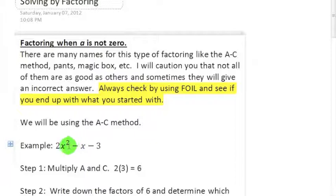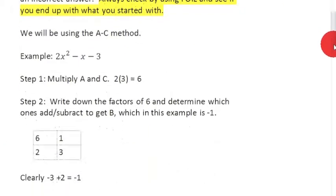It's going to be very similar to what we do here, but it's going to be called the AC method because we're going to take a, in this case it's 2, and c, in this case negative 3. The sign, you can kind of ignore the sign, but it does play a big role in choosing our numbers. I need the signs to become a negative 6, so that means that my signs are going to be the opposite here.